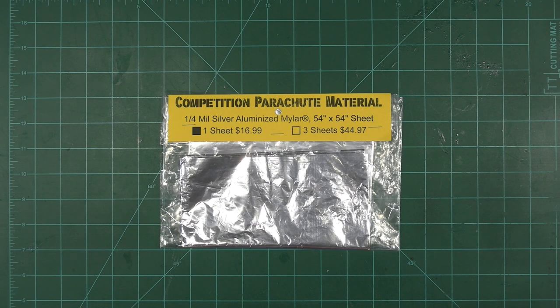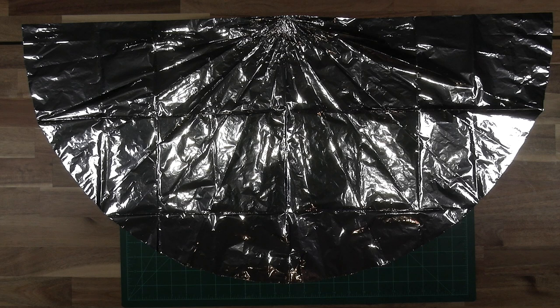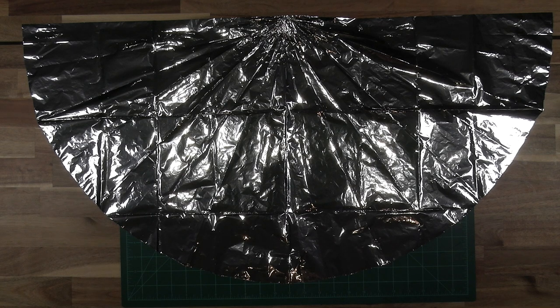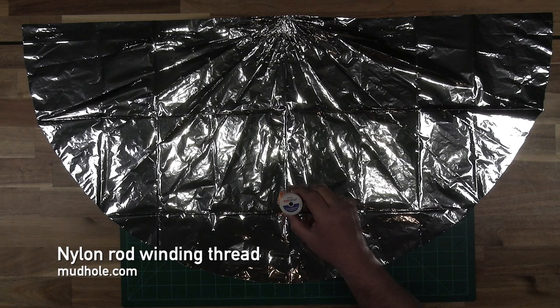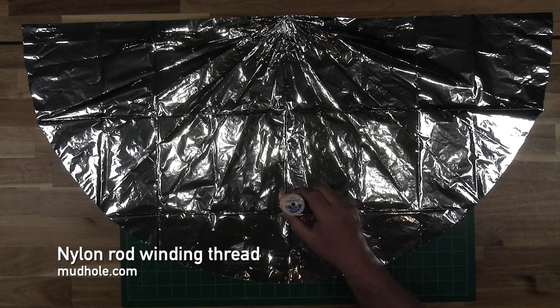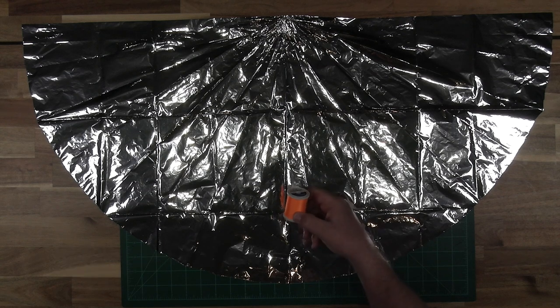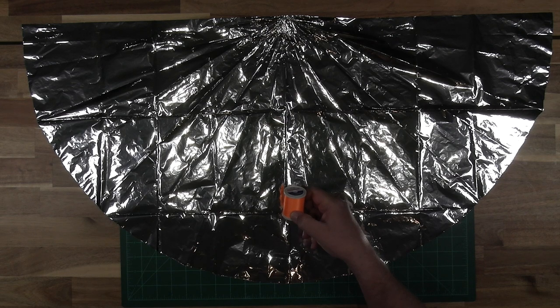Another big advantage of mylar is that it does not take a set after folding, unlike plastic. The convenience of being able to fold your parachute in a windless room the night before a contest beats the heck out of trying to fold a chute on the field. I've cut this 36 inch canopy out of a sheet of uncut mylar, and we're going to attach 16 shroud lines around the perimeter. I use a nylon thread designed for attaching ferrules to fishing rods for this, although simple cotton threads should work. The advantage of the nylon thread is that it's less likely to snag on itself or the canopy during deployment.